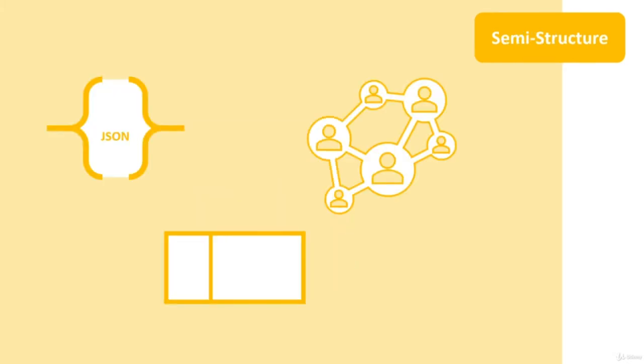Semi-structured data is not in a relational form, but it still has some kind of structure. Some commonly known formats are JSON, key-value tables, and graphs. This is explained in more detail in the non-relational section later in this course.